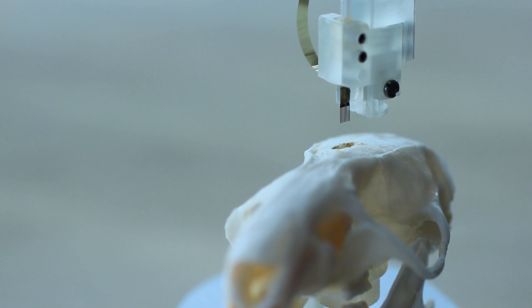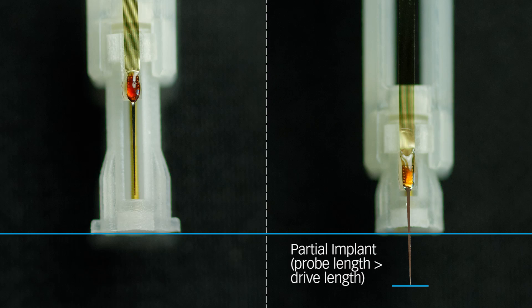Position the O-Drive at the implant location and lower until the base of the O-Drive is level with the bone surface. If your probe length is longer than the drive length, you will perform a partial implant, where the initial part of the implant is performed with the stereotaxic manipulator, and the O-Drive is used for depth adjustment afterward.